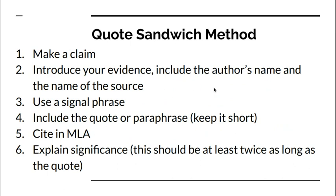Quick recap of the quote sandwich method. Remember that you start by making a claim, then you move into introducing your evidence including the author's name and the name of the source. Right before your quote you're going to use a signal phrase. Include the quote or paraphrase — make sure that you keep it short — cite in MLA, and then lastly explain the significance. This is where you tell us how this quote supports that claim. Remember that your explanation should be at least twice as long as the quote itself. For examples of how to use the quote sandwich method, you can check out our previous lectures and links on that topic.